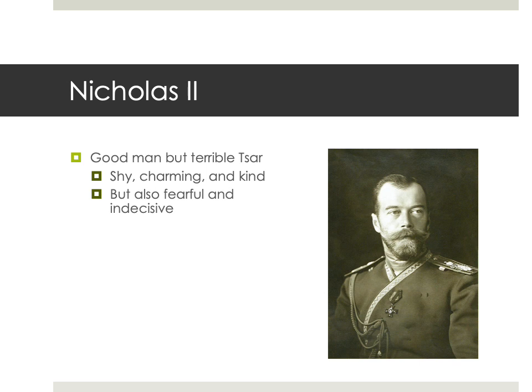Nicholas was pretty much the exact opposite of his father in terms of personality. His father had been kind of brutal, decisive, and intimidating, both in terms of personality as well as physically — Alexander III had been a massive man, like 6'4", around 280 pounds, a very big dude. Whereas Nicholas II was kind of short and scrawny. Complete different people, different personalities, different physical presence. Again, Nicholas didn't really have what it took to rule as a Tsar.